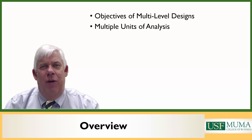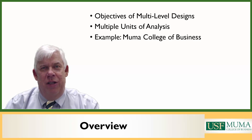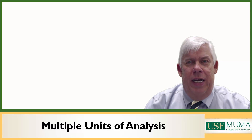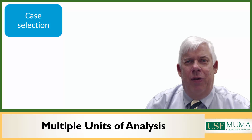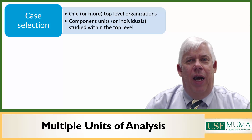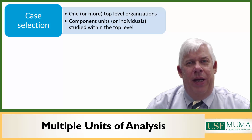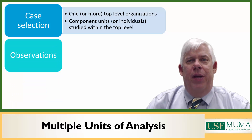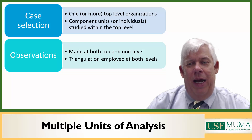We'll talk about dealing with multiple units of analysis within a case. The multi-level case design involves multiple units of analysis. The case selection process essentially involves selecting a top organization, which is the principal unit of analysis for the case, and then component units or potentially individuals are studied in individual case studies. The analysis focuses on how they contribute to the top-level organization. Observations are made at both top and unit levels, and we try to apply triangulation as much as possible at both levels.